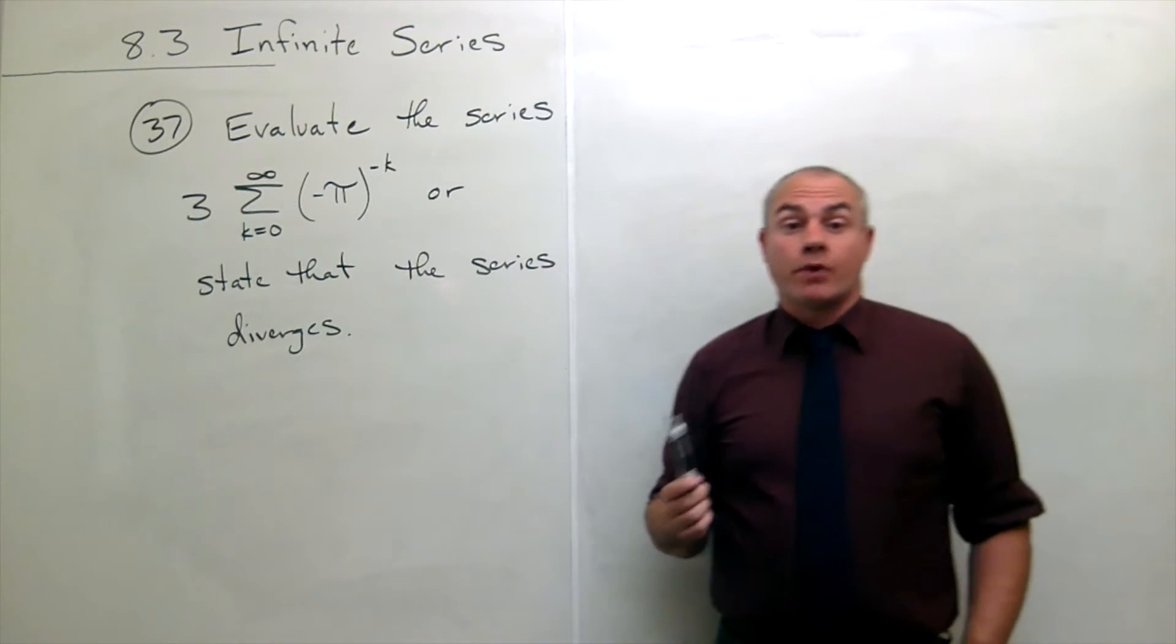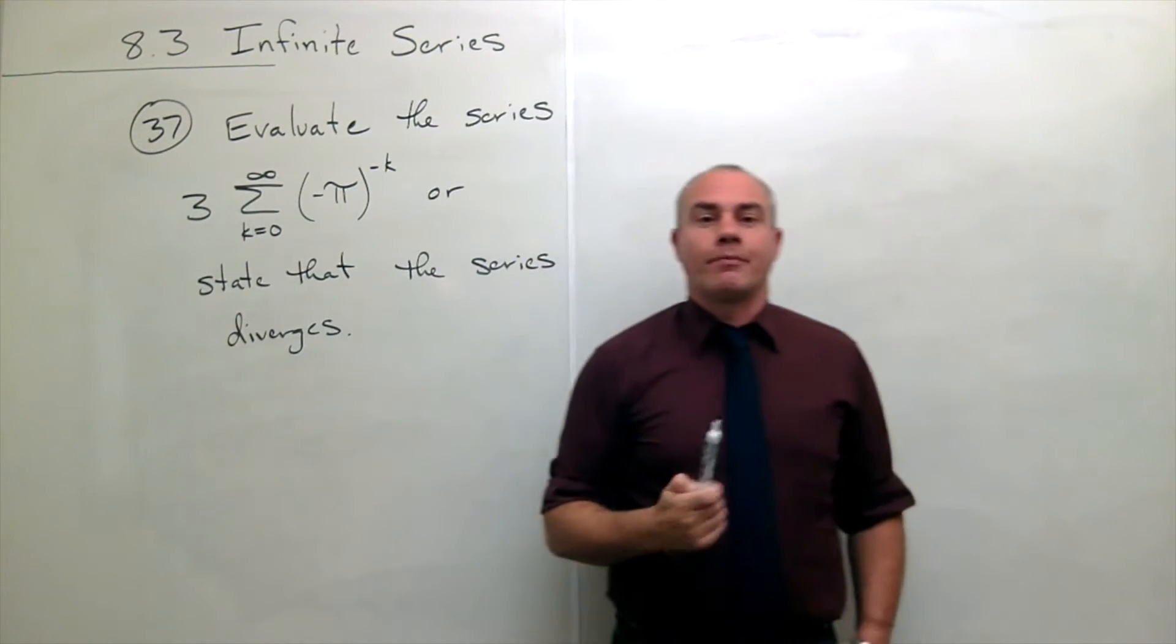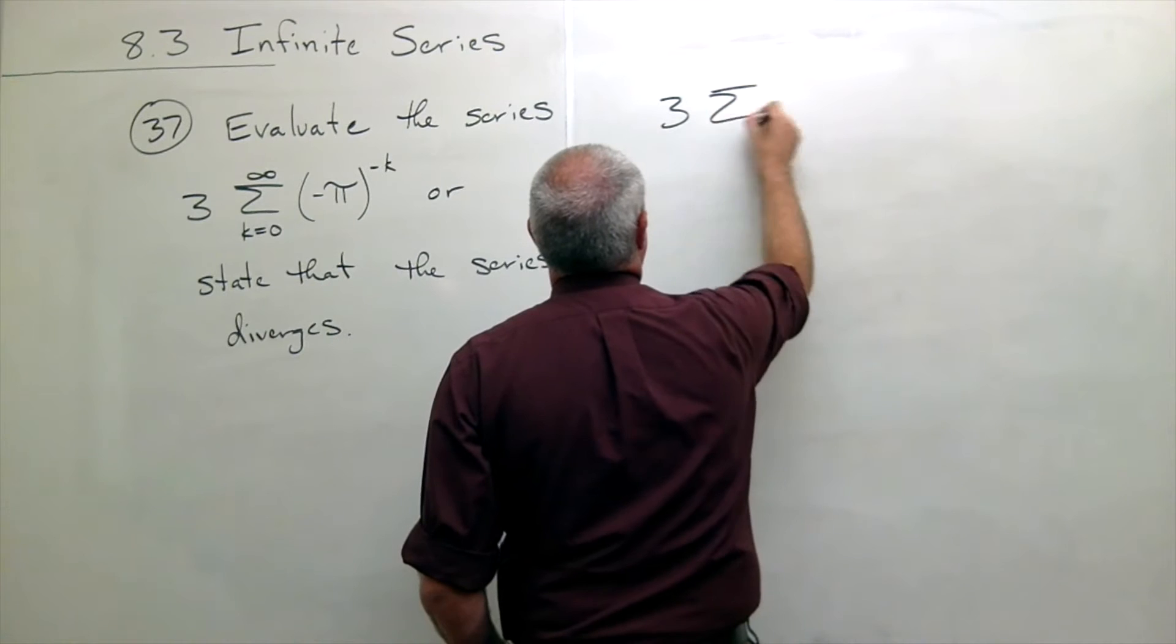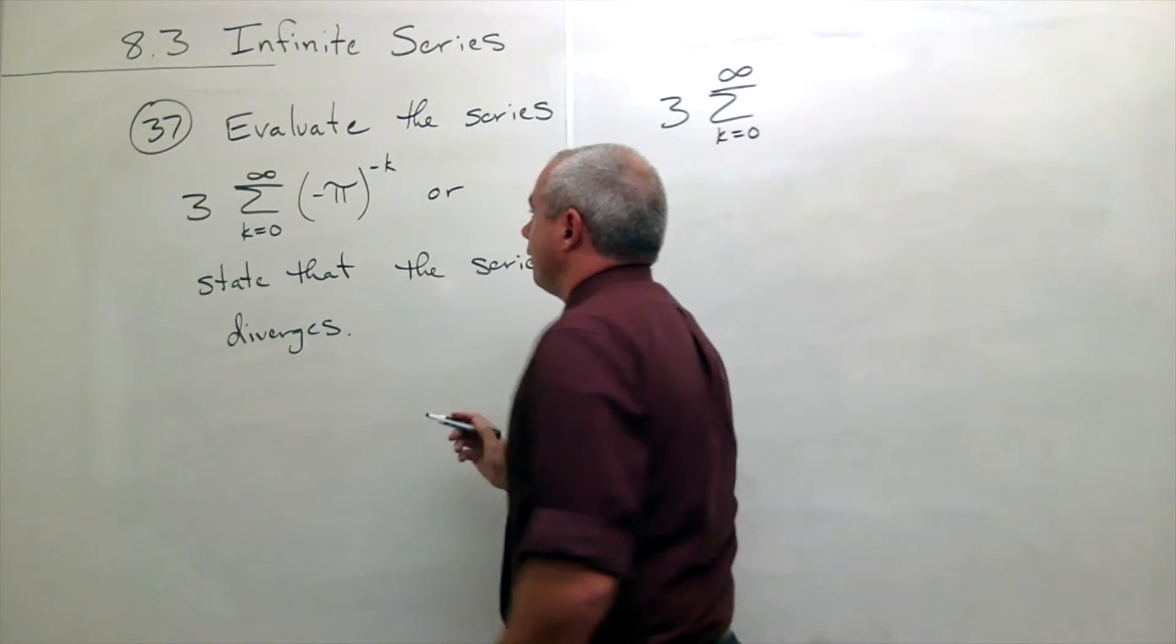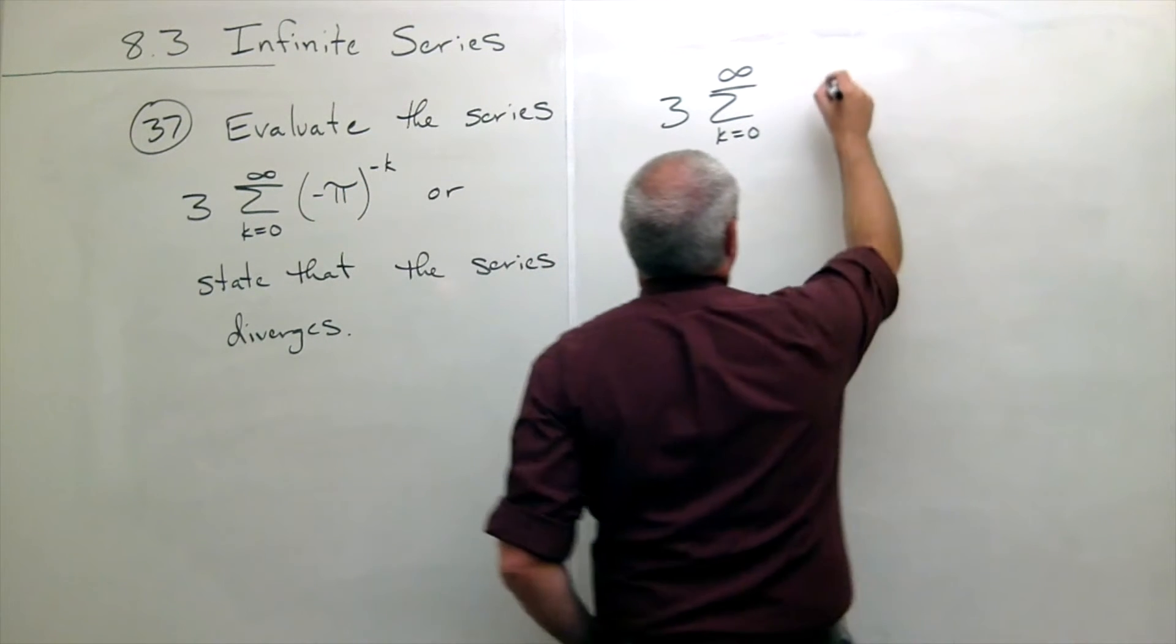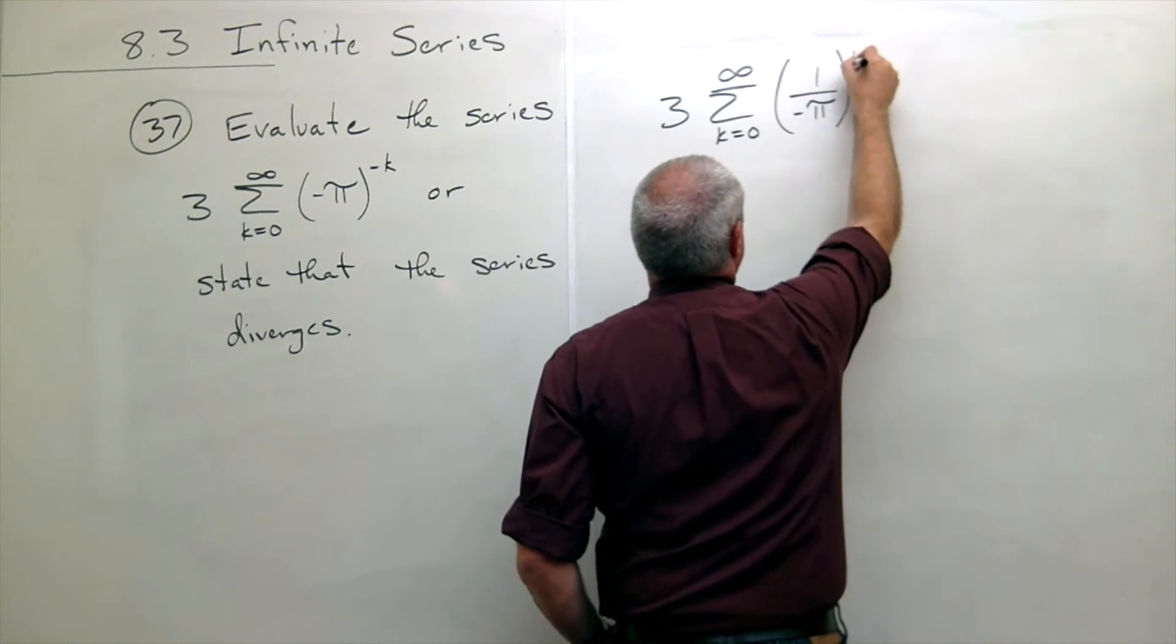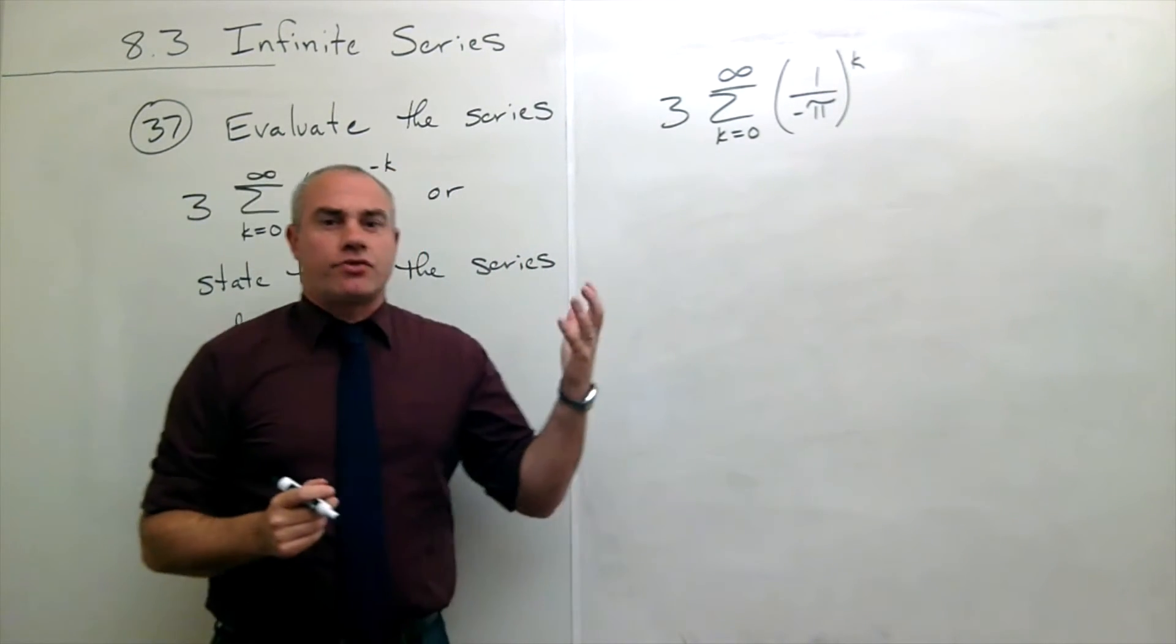So the first thing I want to do in this problem is rewrite this series a little bit. The form of the series isn't the easiest to work with, so let's just rewrite this as 3 times the sum k going from 0 to infinity of, instead of writing negative π to the negative k, I'll just write 1 over negative π raised to the k. I think in this way it's easier to see.